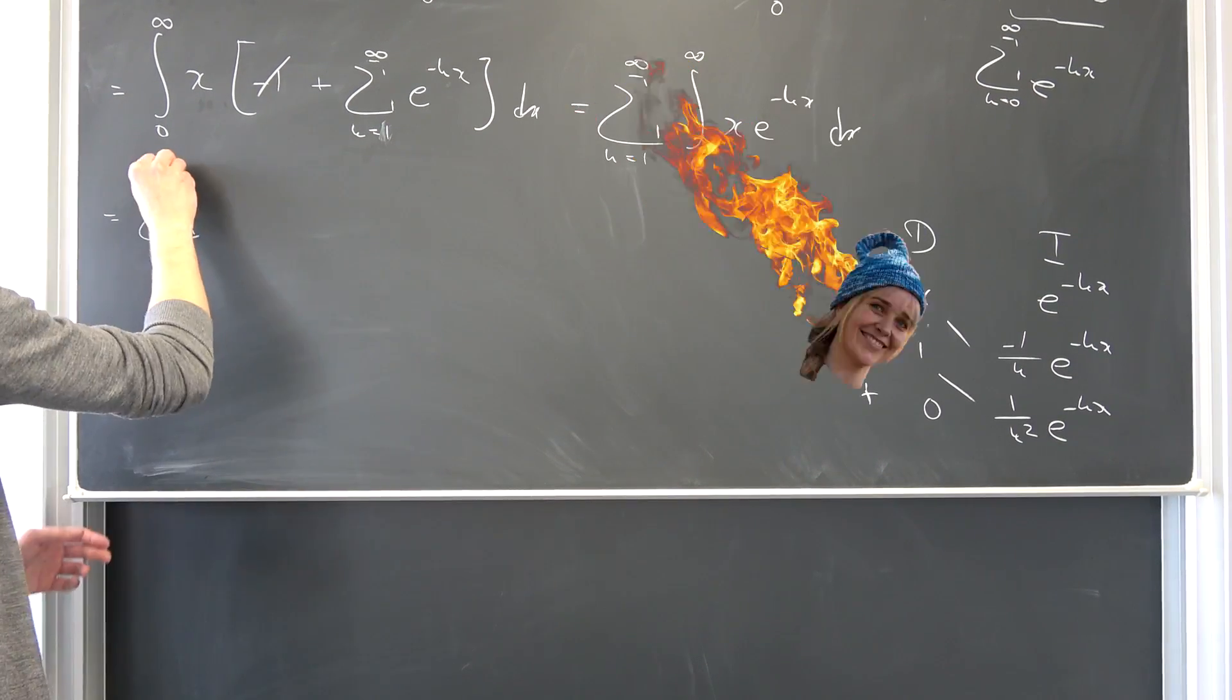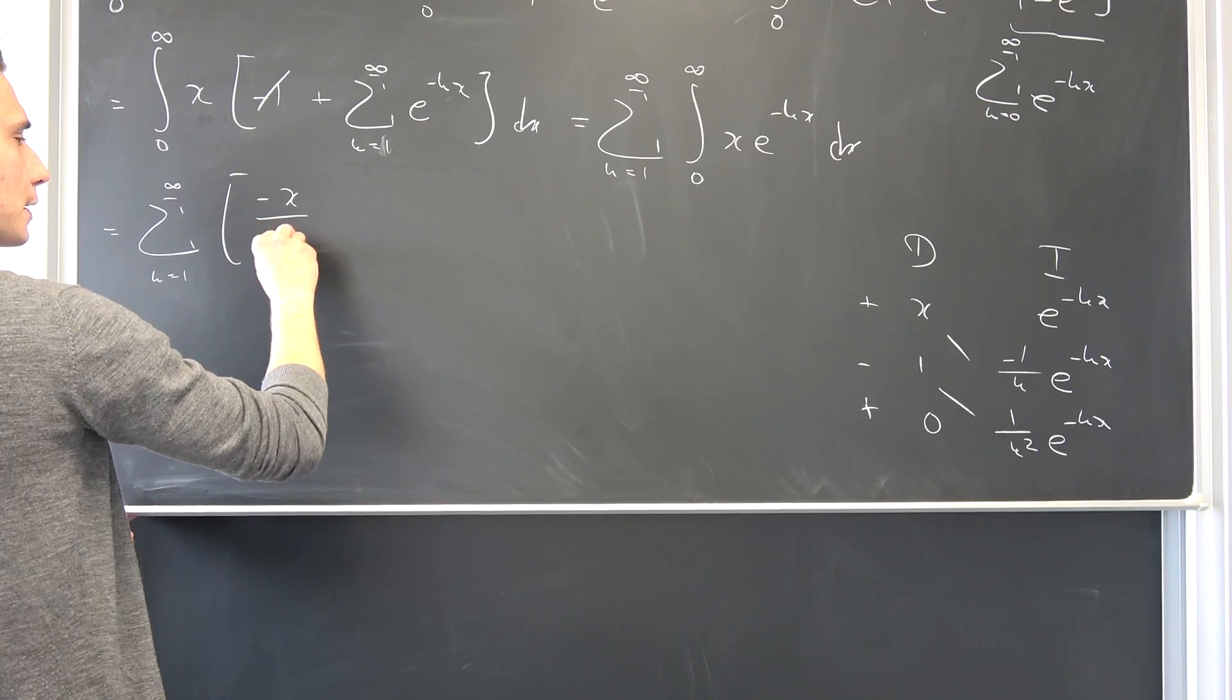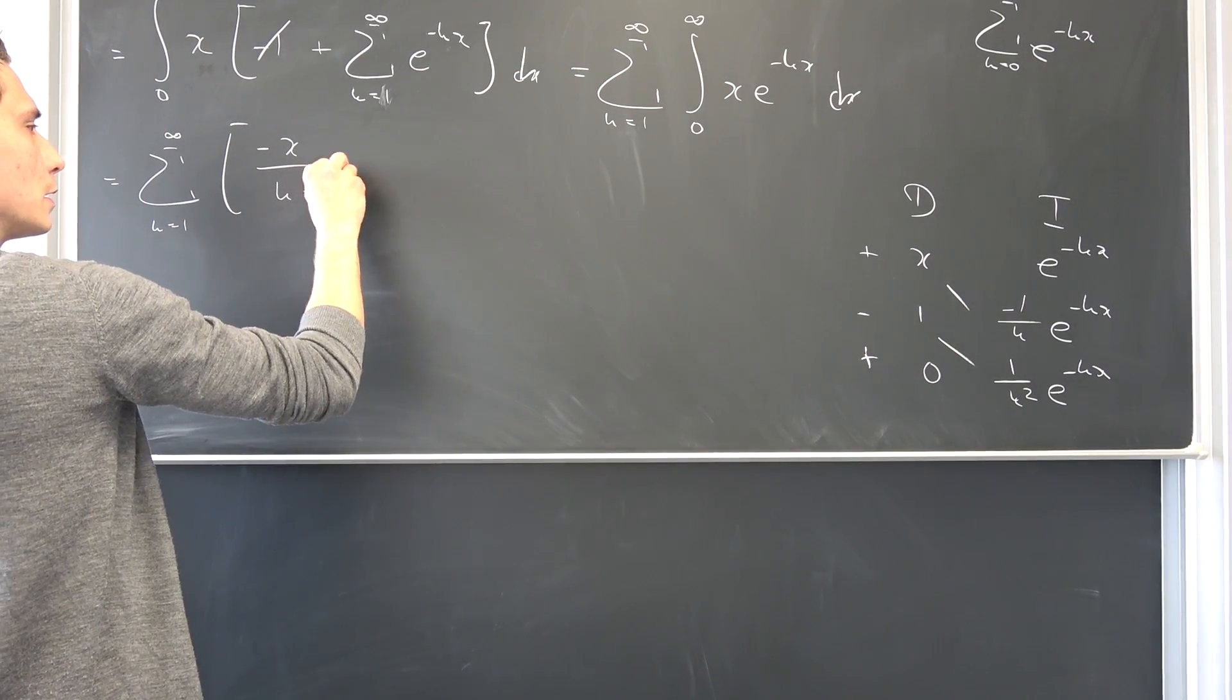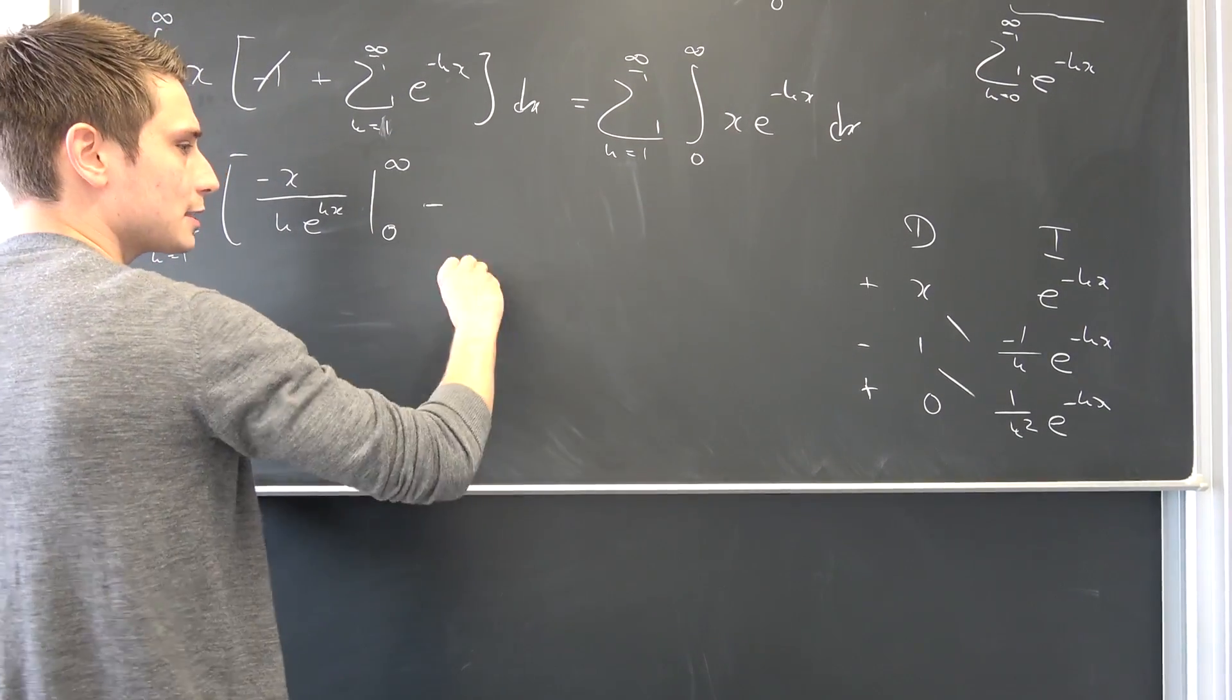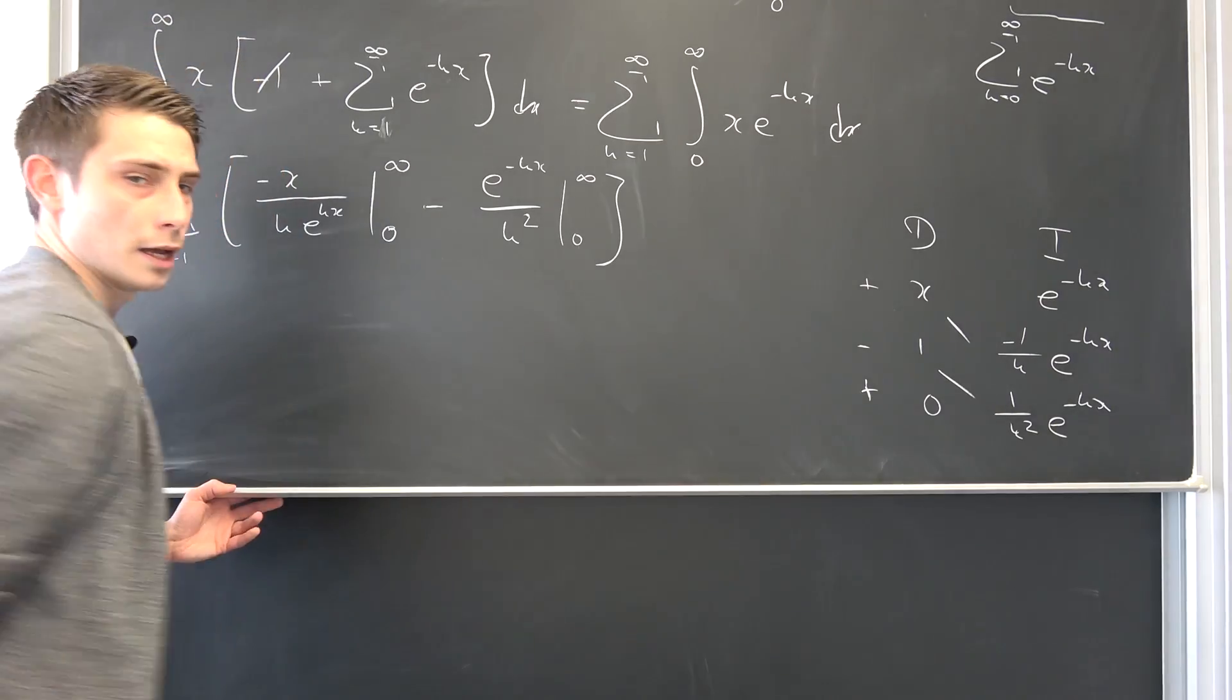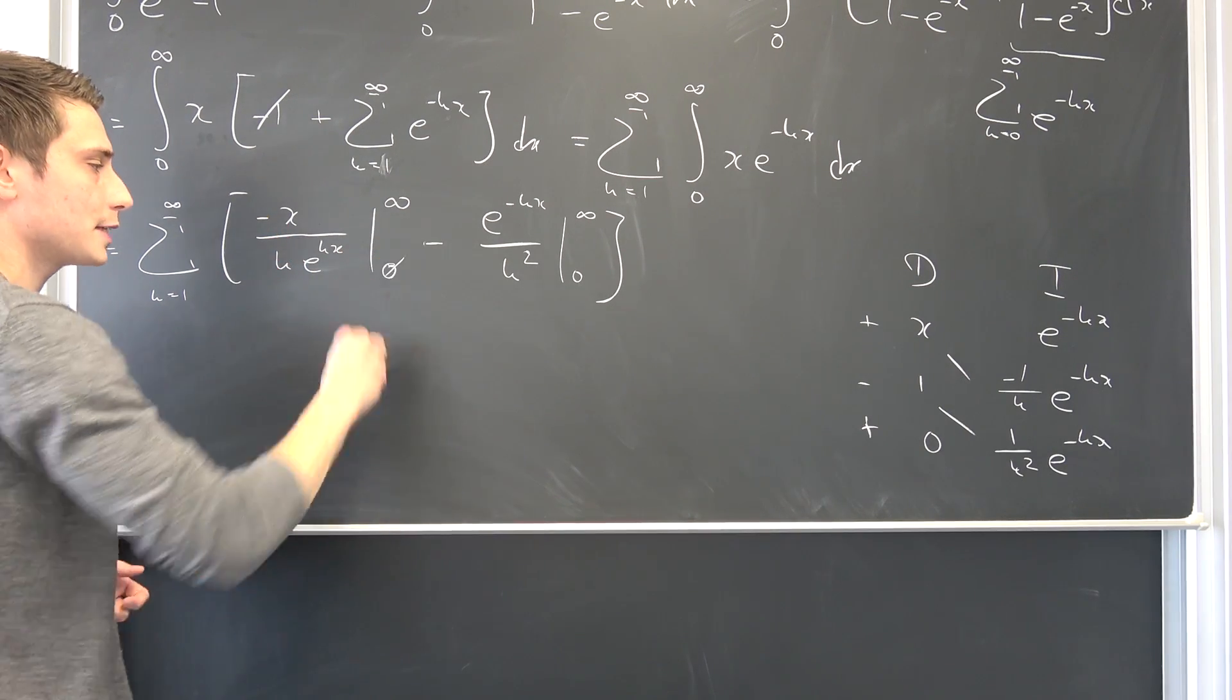Sum running from k equals to 1 to infinity of negative x over k times 1 over e to the k times x from 0 to infinity. And then we are going to get negative e to the negative k times x over k squared from 0 to infinity. Let's focus on the 0 parts at first. If we plug 0 into here, it's going to vanish just because of this x up here.